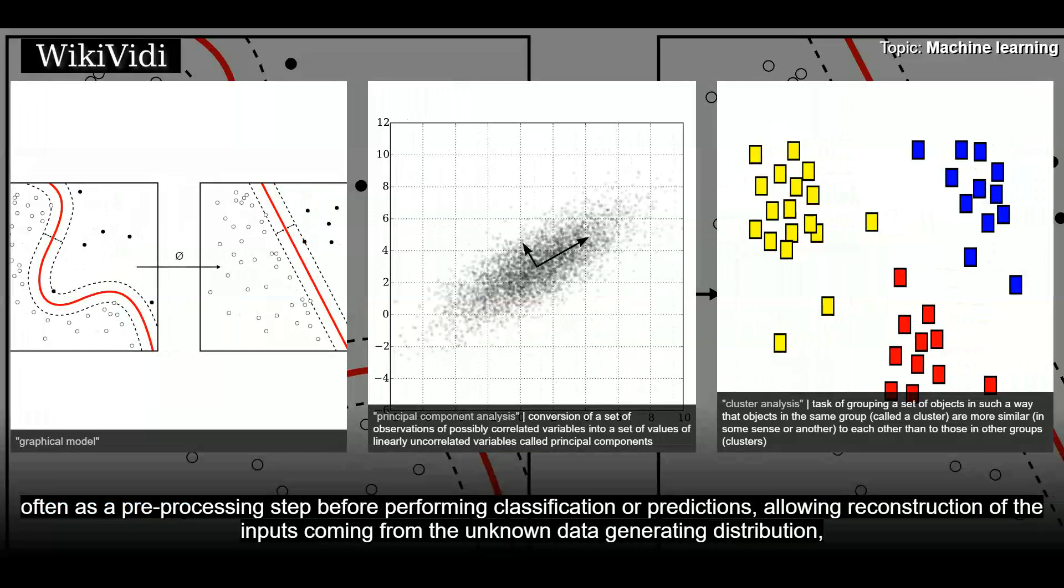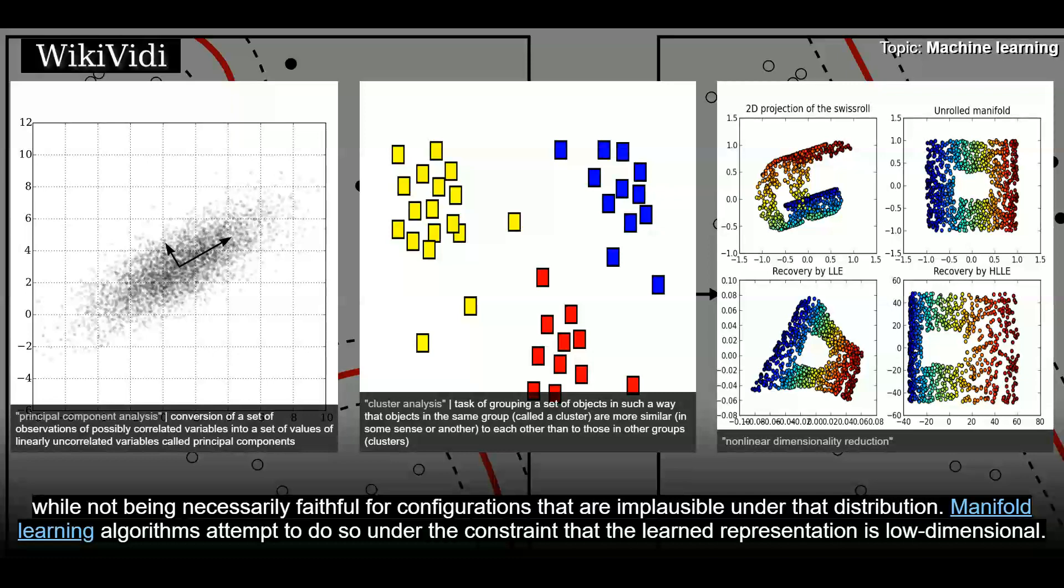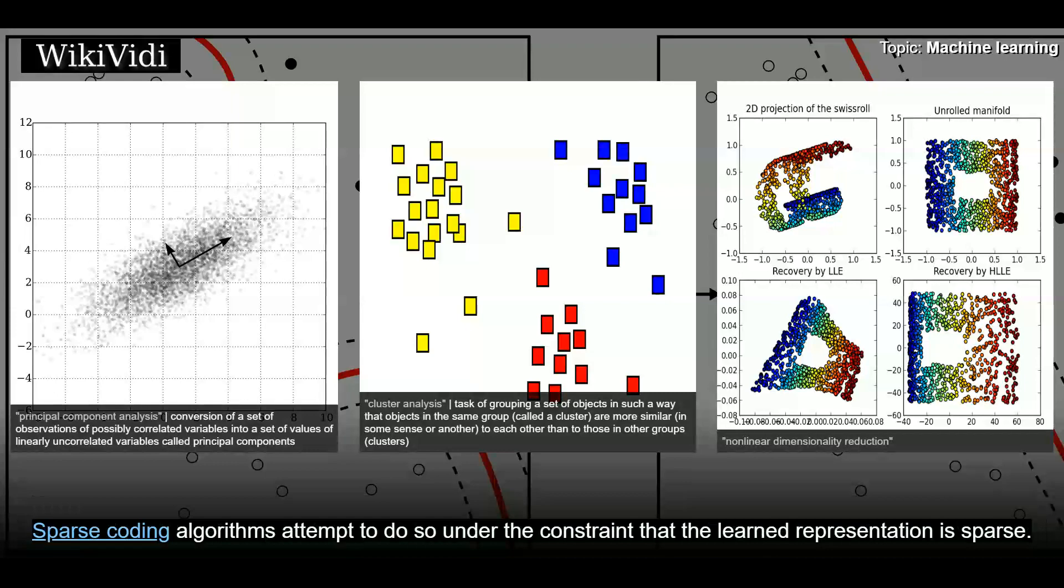While not being necessarily faithful for configurations that are implausible under that distribution. Manifold learning algorithms attempt to do so under the constraint that the learned representation is low-dimensional. Sparse coding algorithms attempt to do so under the constraint that the learned representation is sparse.